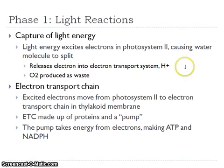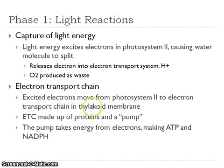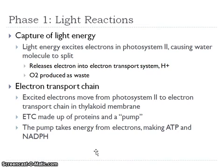These hydrogen molecules are going to travel along to something called the electron transport chain. Excited electrons move from photosystem 2 to the electron transport chain, which is located in the thylakoid membrane. This electron transport chain, also known as ETC, is made up of proteins and a pump. The pump takes energy from the electrons and produces ATP and NADPH.